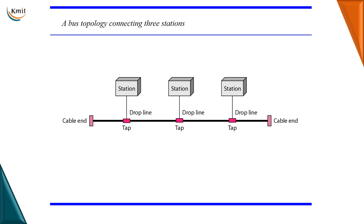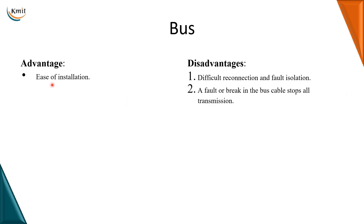Let us see the advantages and disadvantages of bus topology. The advantage is ease of installation, as all the devices only have to make one point connection to the bus cable. The disadvantages are difficult reconnection and fault isolation, because all of them are connecting to a single cable and it is very difficult to identify where the fault has occurred. A fault or break in the bus cable will also stop the entire transmission.